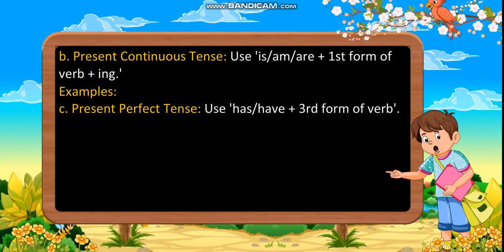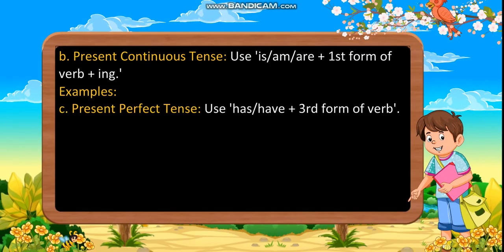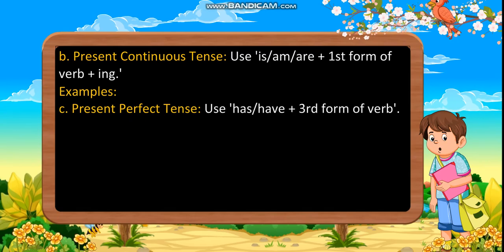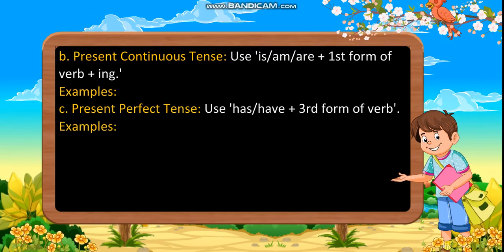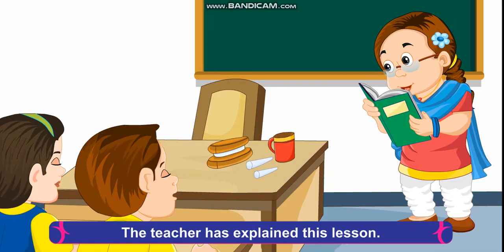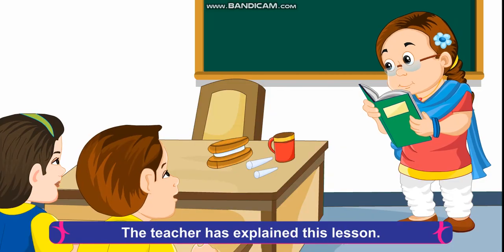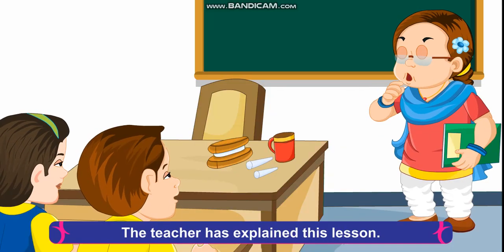Present perfect tense: Use has or have plus the third form of verb. Examples: The teacher has explained this lesson. They have done their work.